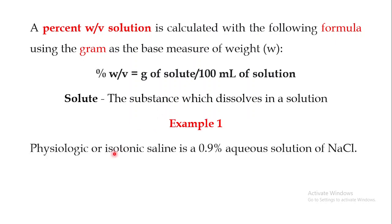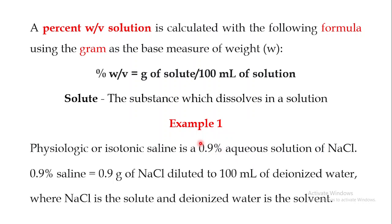For example, if you are told to make a physiologic or isotonic saline solution of sodium chloride, which is actually 0.9% sodium chloride aqueous solution, what you are going to do is take 0.9 gram of sodium chloride and dilute it in 100 ml of deionized water. In this case, sodium chloride is the solute and deionized water is the solvent, giving you a 0.9% sodium chloride aqueous solution.